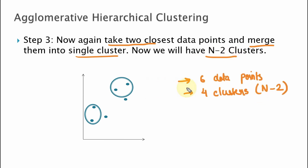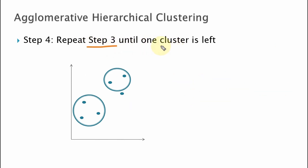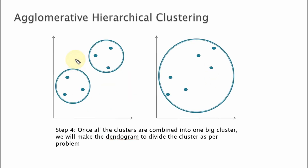We will repeat step 3 until we have one cluster left. Now we have three clusters total: the first cluster has three data points, the second cluster has two data points, and the third is a single cluster. We continue repeating this process until one cluster remains. In step 4, we combine all remaining data points until we have only one cluster left. Now we have to use the dendrogram to divide the clusters as per the problem.